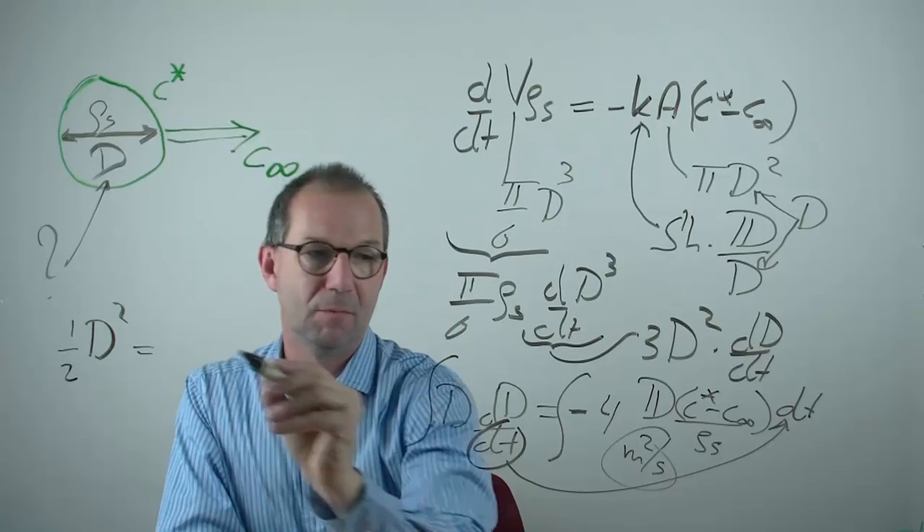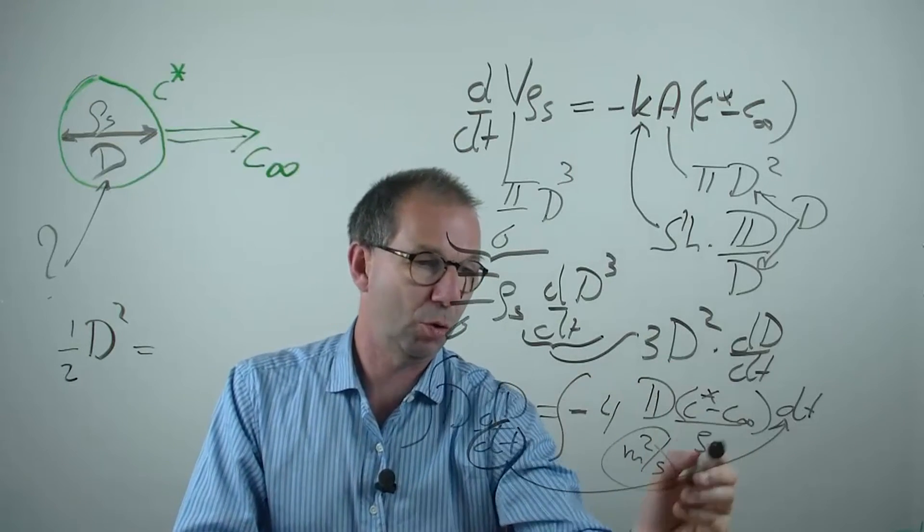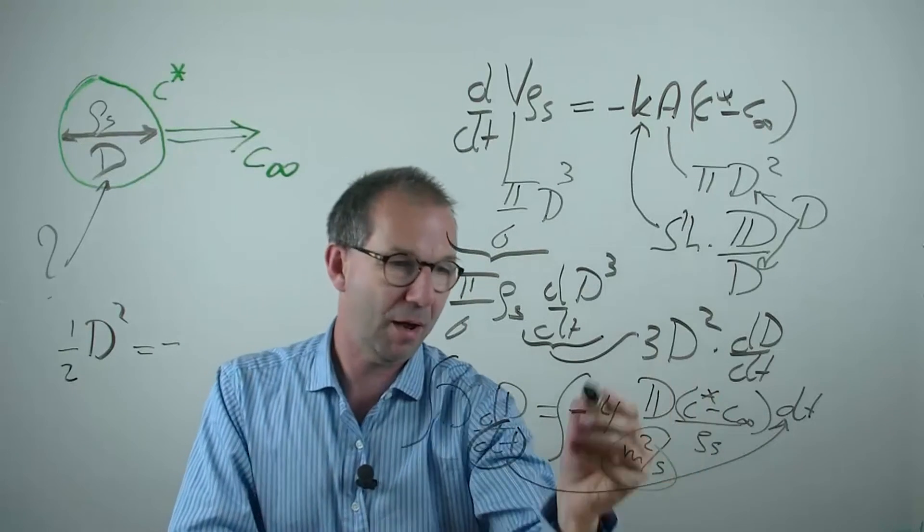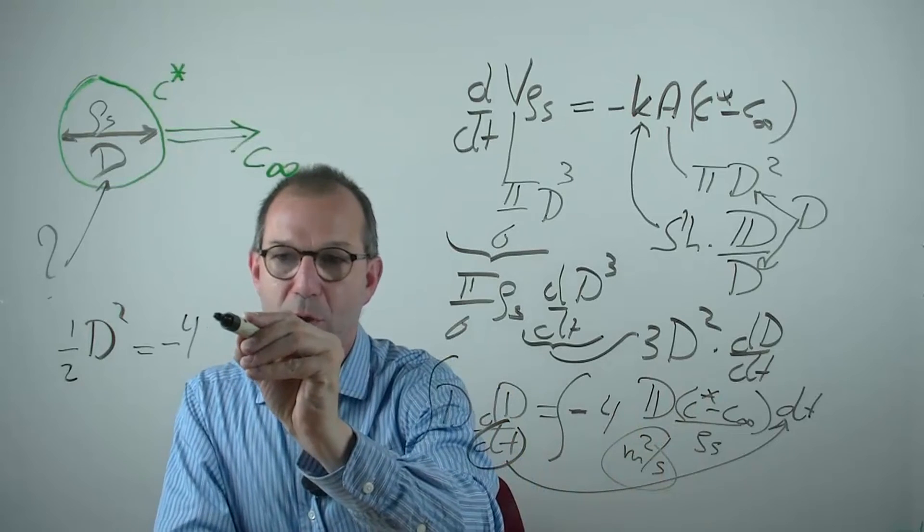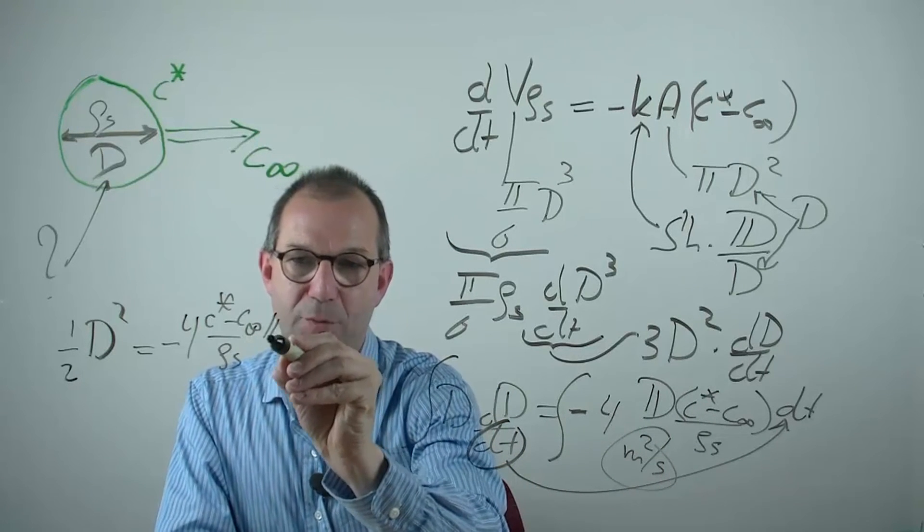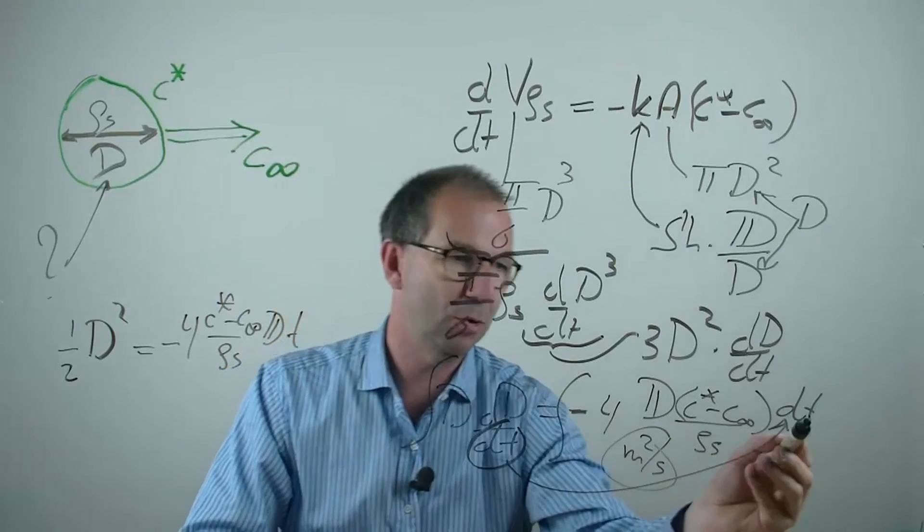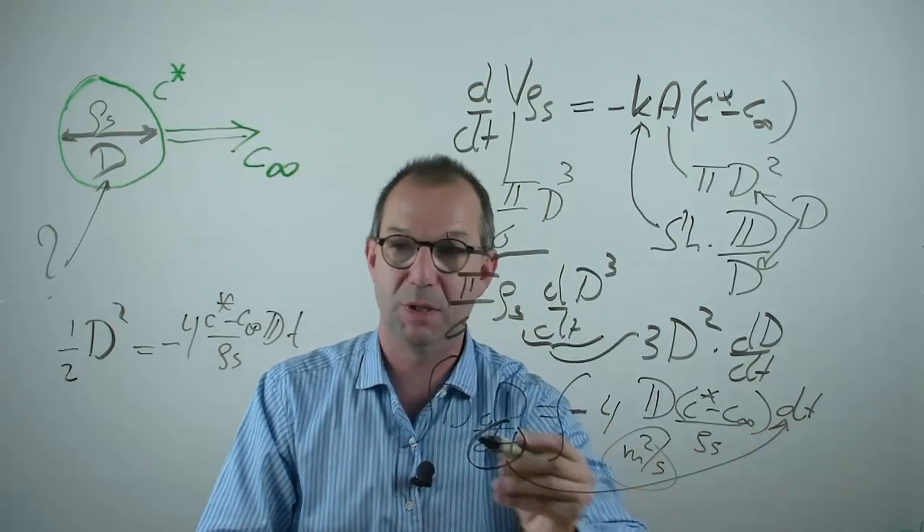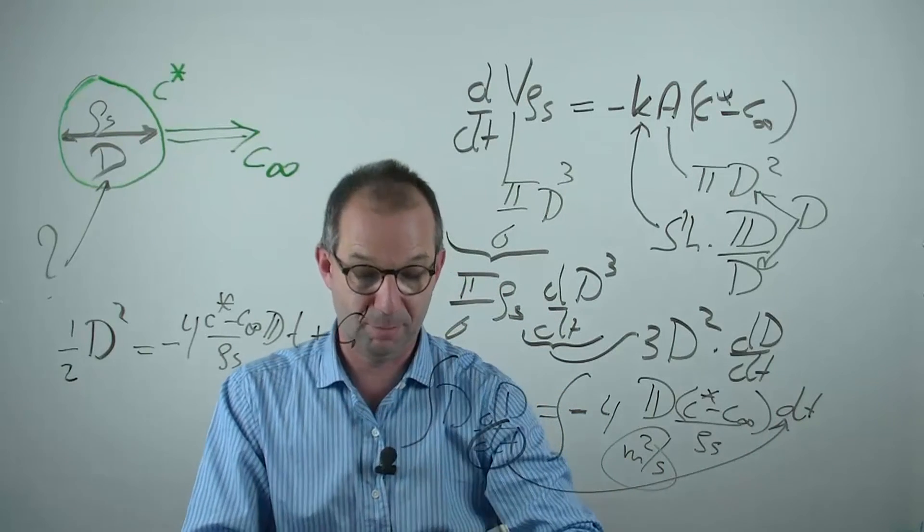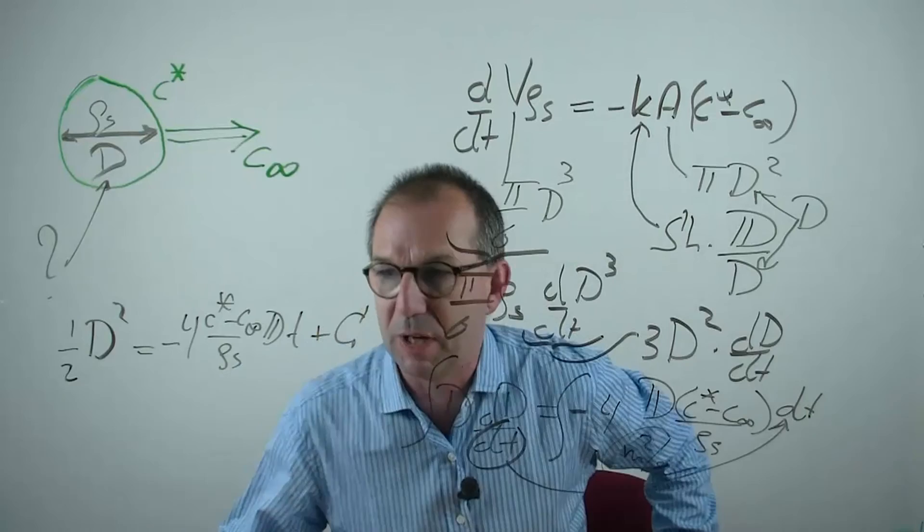On the other side, these are all constants with respect to time. So that's going to be minus everything here. That is the 4 D C star minus C infinity over rho S. Diffusion coefficient times t because I basically integrate dt. That's all that's there to be integrated. You shouldn't forget the integration constant capital C. Move over a little bit so you can see what I'm doing.